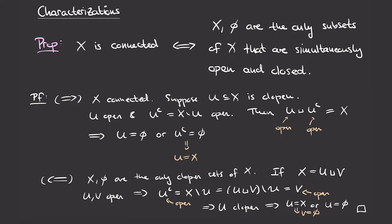This characterization is useful: if we know X is connected, then any non-empty subset that is both open and closed must be the entire space X. This is because the only clopen sets are X and the empty set, and since our subset is non-empty, it must be X. It's often very useful to prove that a certain subset is in fact the entire space, and if your space is connected, proving the subset is simultaneously open, closed, and non-empty accomplishes this.